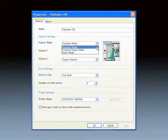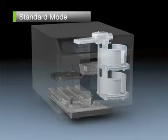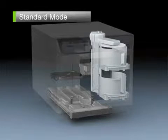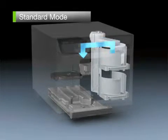For the output of 50 disks or less, set Standard mode and place the disks in Stacker 1. Disks will be transported and data writing will be carried out in the two drives.